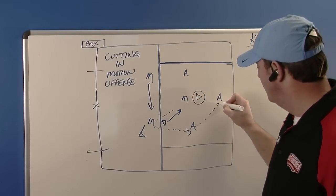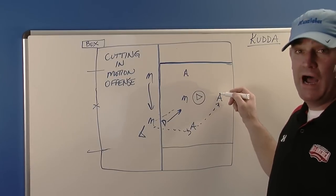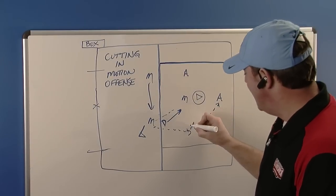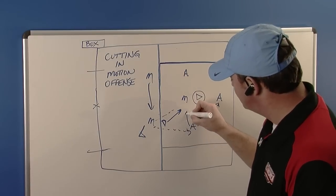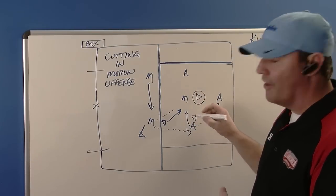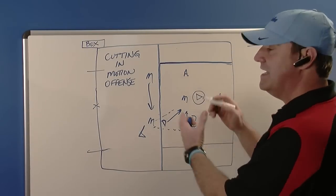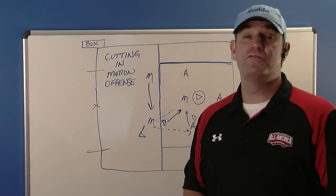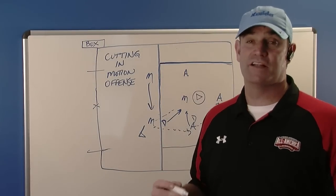This attackman is going to move the ball to this behind-the-goal attackman and he is now going to swing topside so that his defender has to turn and see him. That makes it harder for them to slide against a great motion offense.